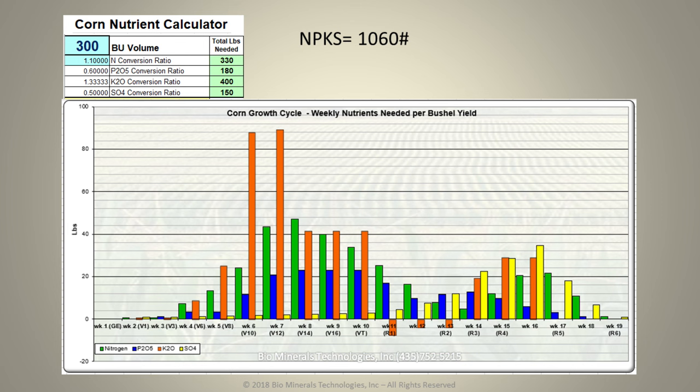This is the nutrient requirement for 300-bushel corn: nitrogen, 330 pounds; phosphate, 180 pounds; potassium, 400 pounds; sulfur at 150 pounds. So we've got a total of 1,060 pounds of mineral required at these various growth stages. You can see the uptake pattern of the plant — every one of these plants has a very specific nutrient uptake pattern, when it wants the mineral at the time that will function in its physiological development. They're all coming in at different levels at different times, but they all have to be there.